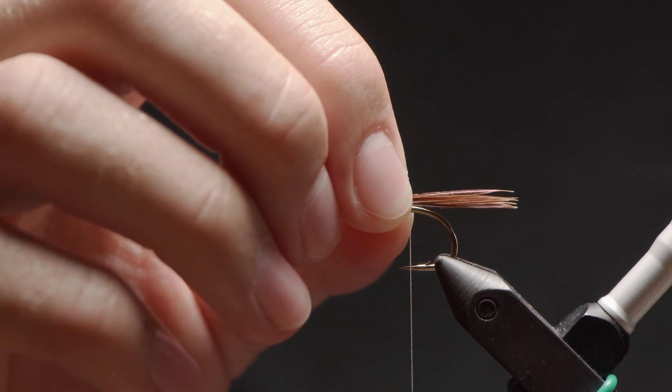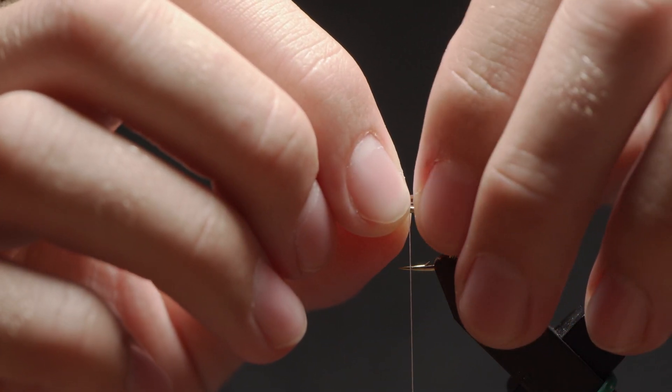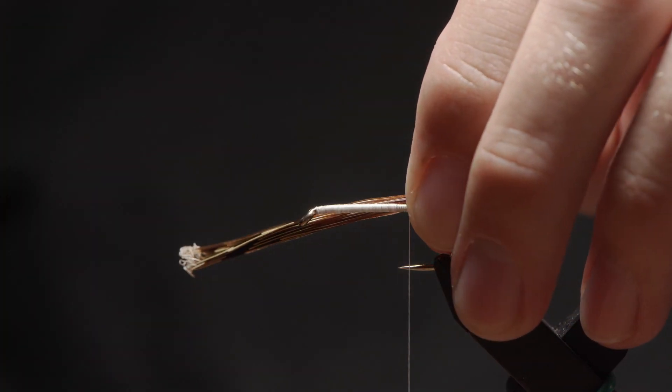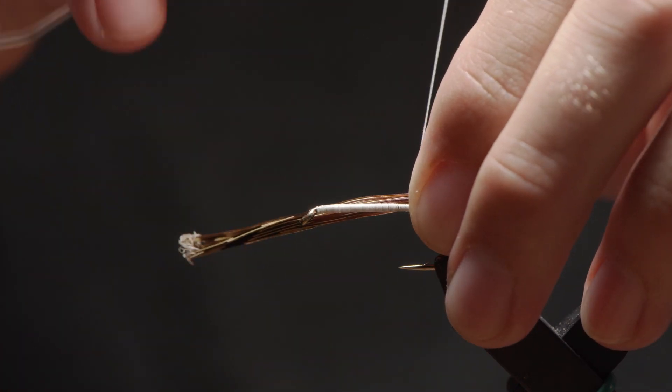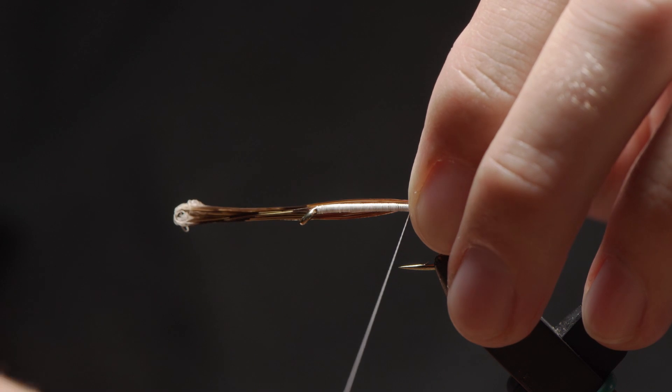We're going to set our material down where we want to tie it in. We're going to come in with our off hand, our non-bobbin hand, hold it in place, take our thread, and we're going to make a loose thread wrap here. Completely loose, no tension.